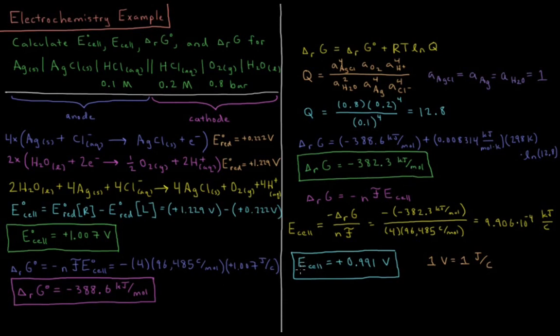And then finally, the EMF of the cell, lots of ways I could get it from all the values that I've got here, but the simplest, I believe, is that delta G of reaction equals minus NF E cell. So E cell equals minus delta G of reaction over N times F, minus, parentheses, minus 382.3 kilojoules per mol, gives me a positive. 4 times 96,485 coulombs per mol, gives me, in the end, 9.906 times 10 to the minus 4 kilojoules per coulomb, or kilojoules per coulomb, which would be kilovolts. So the ending result, once I convert from kilovolts to volts, is that the final EMF of my cell is equal to positive 0.991 volts.